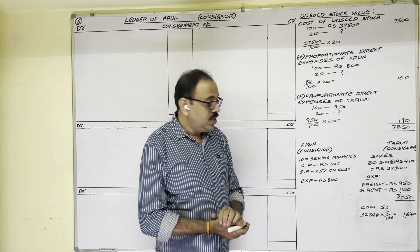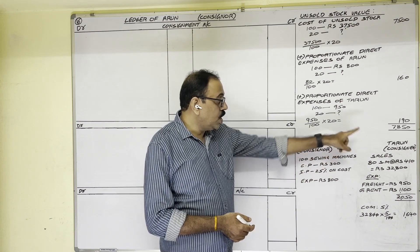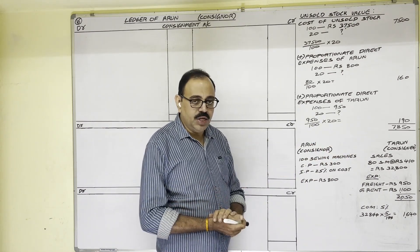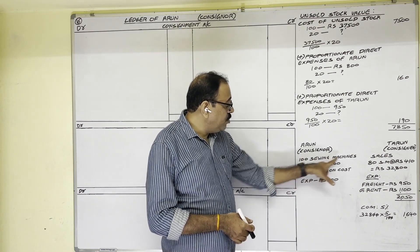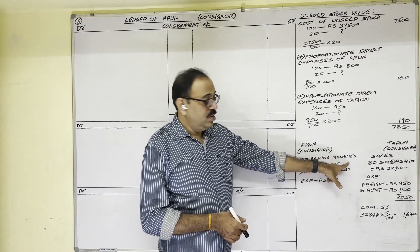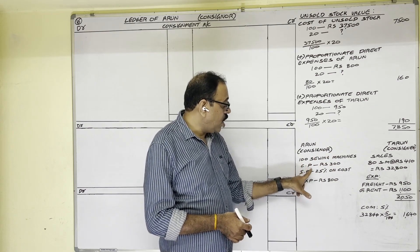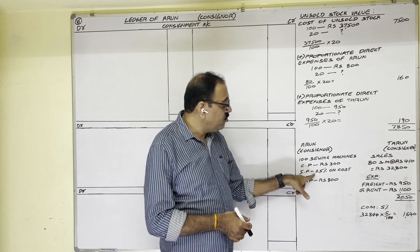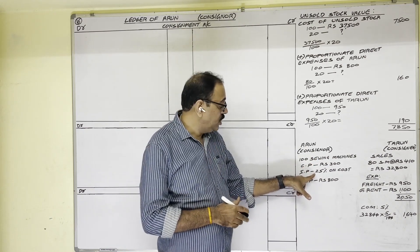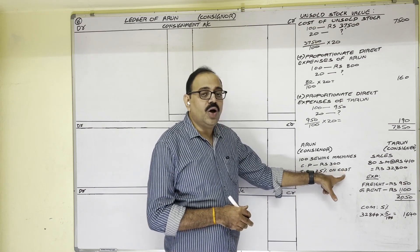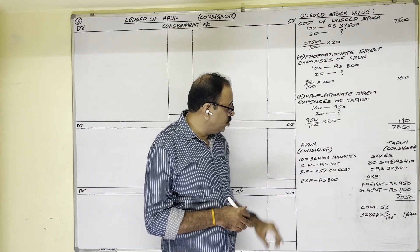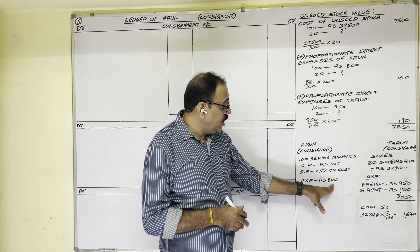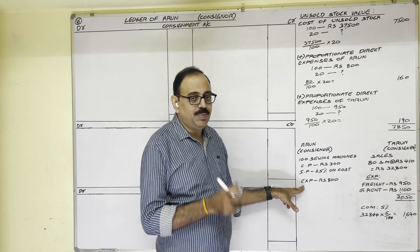Arun is sending sewing machines to Tarun on consignment basis, so Arun is the consignor and Tarun is the consignee. The consignee's area name is not available here. 100 sewing machines are sent by the consignor. One machine cost price is 300 rupees, and the consignor sent at invoice price — invoice price is fixed at 25 percent above cost. To send these goods, the consignor incurred 800 rupees expenditure.